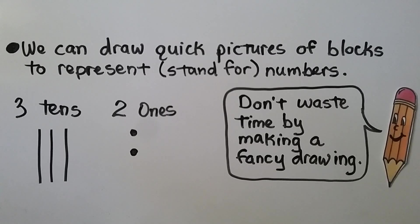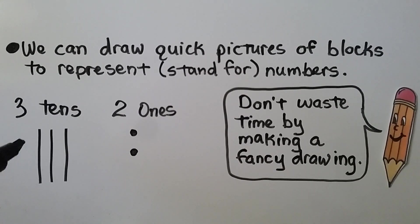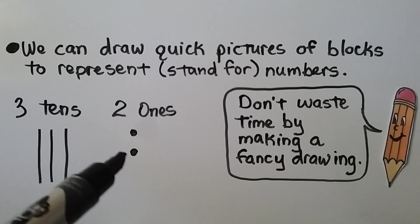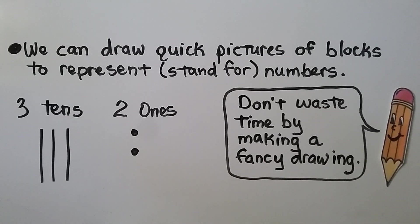We can draw quick pictures of blocks to represent — that means stand for — numbers. We can make a line to represent a 10, so if we have 3 tens we make 3 lines. And we can make a little dot for ones — if we have 2 ones, we make 2 little dots. We don't want to waste time by making a fancy drawing.